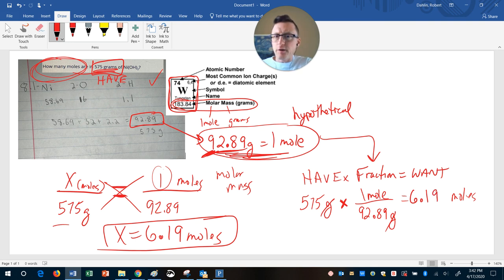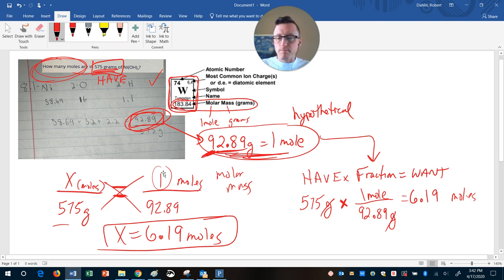So I think the key for you here, Charity, is that number right there, 92.89. Make sure you get that as grams that equal one mole, and then you can use that in your math. Anything else that you have, if you have any questions, if that doesn't make sense, please let me know. Thank you.